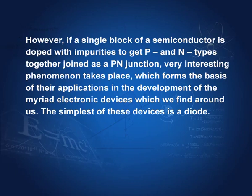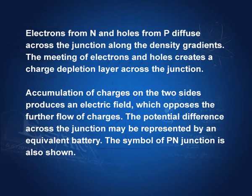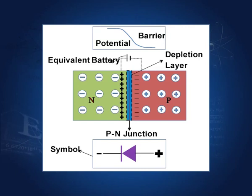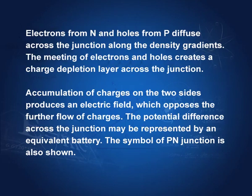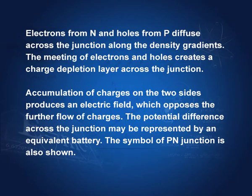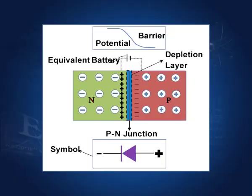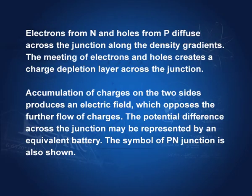Electrons from the n-type and holes from the p-type: here in the n-type the density of electrons is high, and in the p-type the density of holes is high. Therefore, electrons move from high density to low density, and holes move in the opposite direction. The meeting of electrons and holes creates a charge depletion layer — when an electron meets a hole, they cancel each other and the charge becomes zero. This layer where there is no charge is known as the depletion layer.